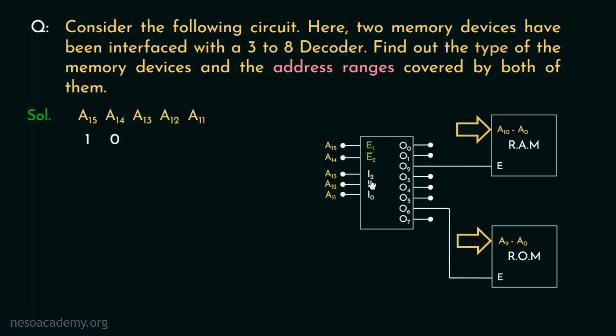Now the input lines I2, I1 and I0 are connected to the address lines A13, A12 and A11 respectively. And to enable the RAM, output line O2 has to be activated. Which clearly signifies that through these three input lines, if we feed 0, 1, 0, the RAM will be enabled.